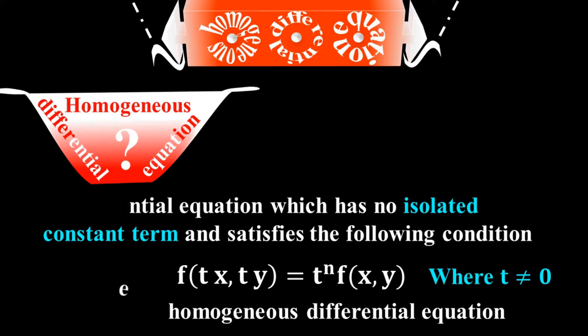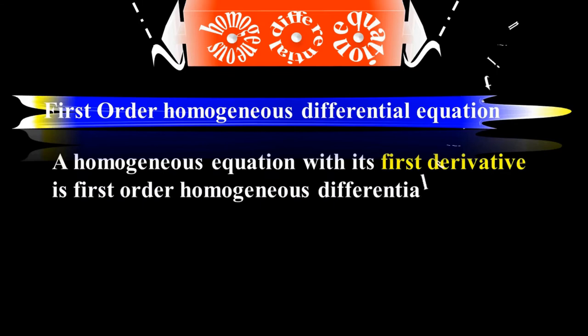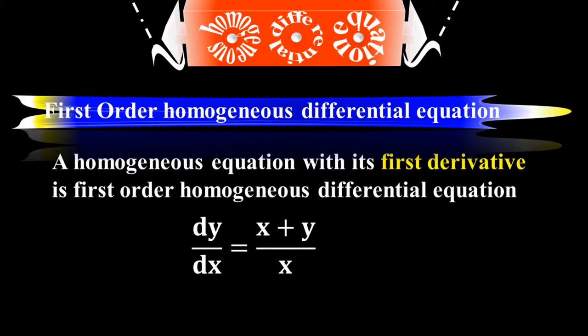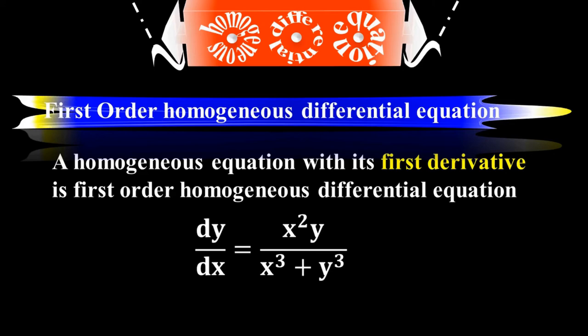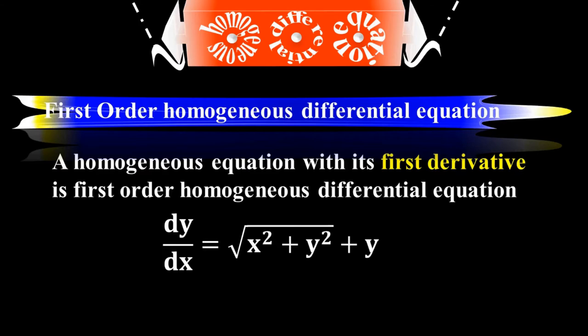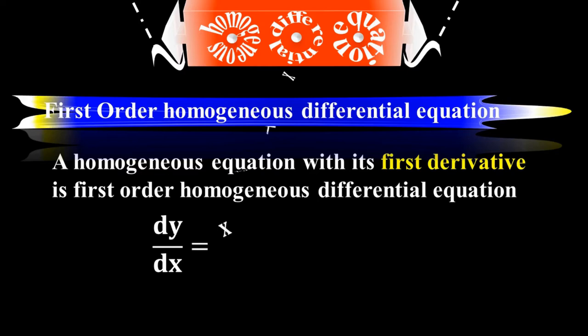A first-order homogeneous differential equation is a homogeneous equation with its first derivative. For example: dy/dx = (x + y)/x. Other examples include dy/dx = x²y/(x³ + y³), dy/dx = (√(x² + y²) + y), and dy/dx = x³ + x²y + xy². These are all first-order homogeneous differential equations.